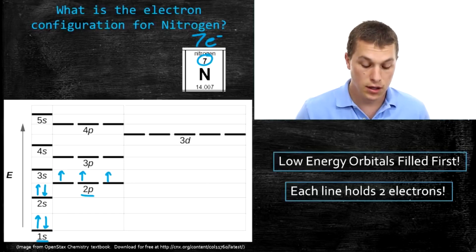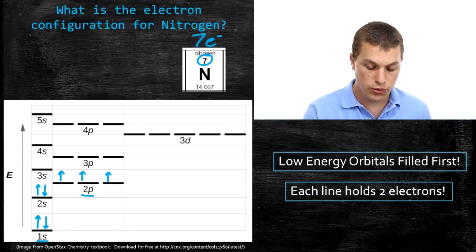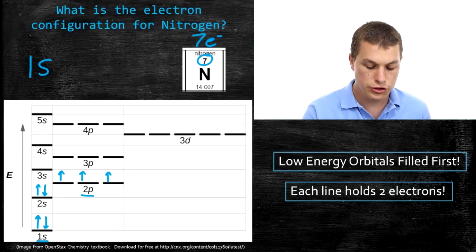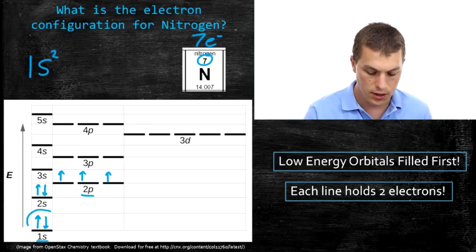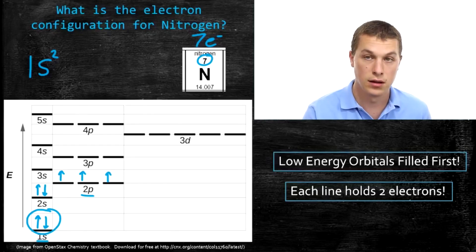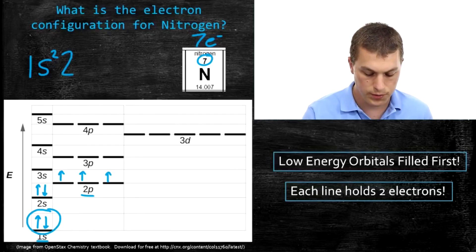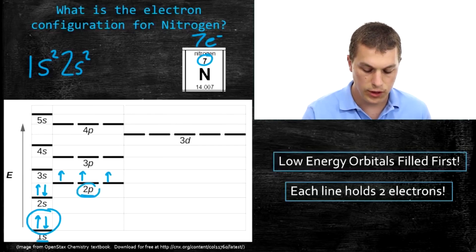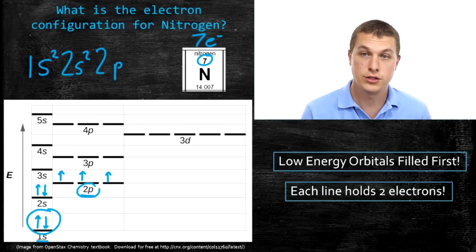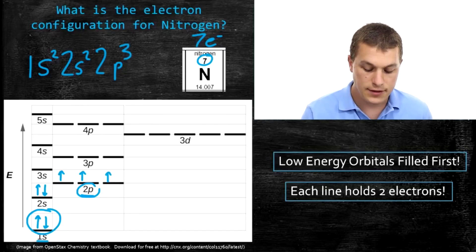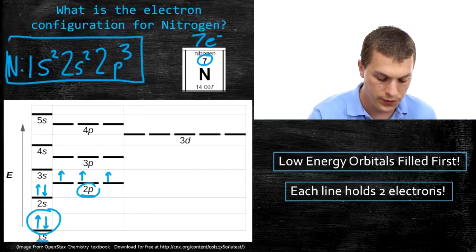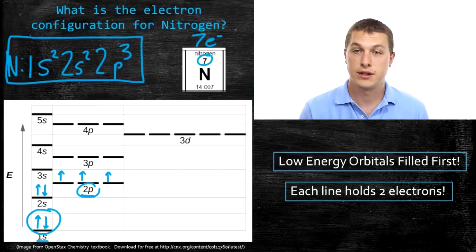Every time you want to tell somebody where your electrons are, you don't want to draw this giant graph, so instead you write out an electron configuration. First, write the orbital name — the very first electrons are in the 1s orbital. Above the s, you write how many electrons are there: two electrons in the 1s, so we write 1s². The next orbital going up in energy is the 2s, which also fills with two electrons: 2s². The next orbital filled was the 2p, which has three electrons: 2p³. That's the electron configuration for nitrogen: 1s² 2s² 2p³.